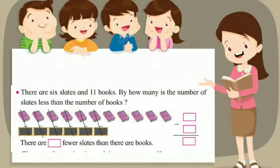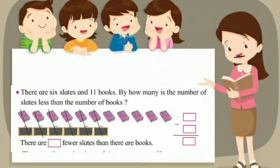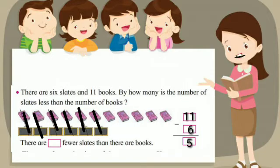Next example: there are 6 slates and 11 books. By how many is the number of slates less than the number of books? 11 minus 6 is equal to 5. There are 5 fewer slates than the books.